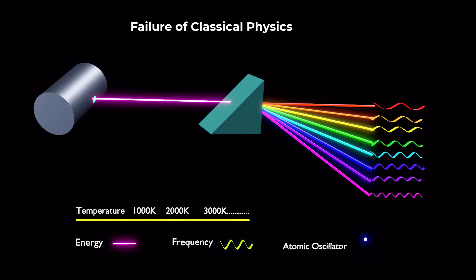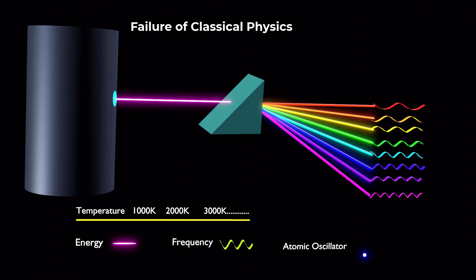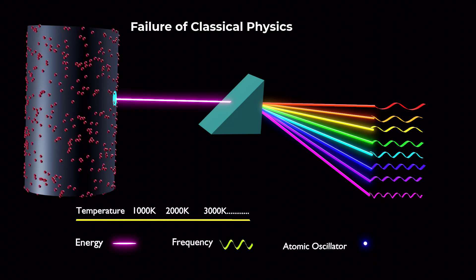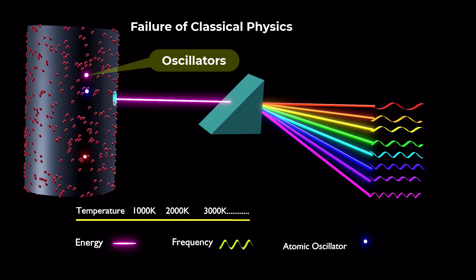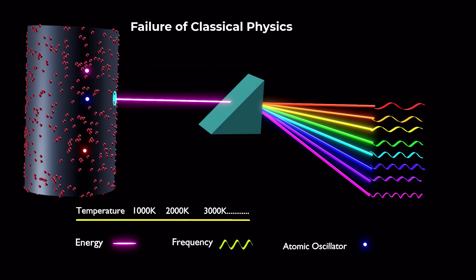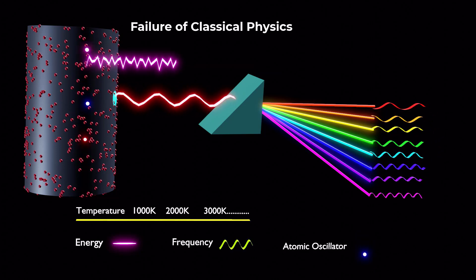According to classical physics, a body is made up of countless atoms. Each atom acts as an oscillator, vibrating with its own frequency and amplitude, thereby emitting light of corresponding frequency.